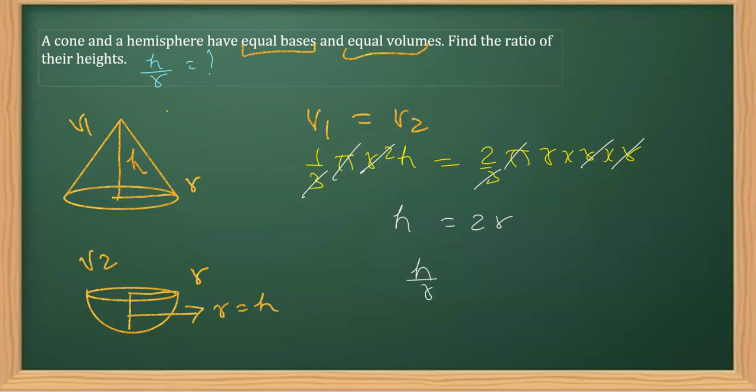So h/r is equal to 2/1, so the required ratio is 2:1. You can see the required ratio in this case we have to get is 2/1, which is 2:1.